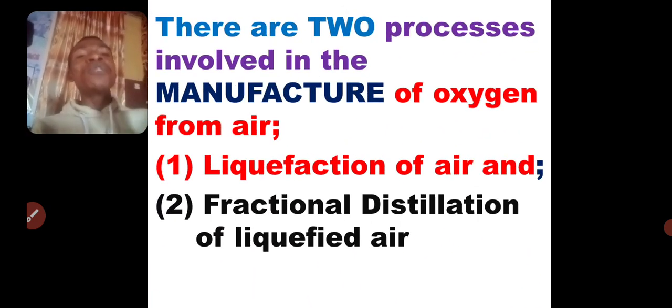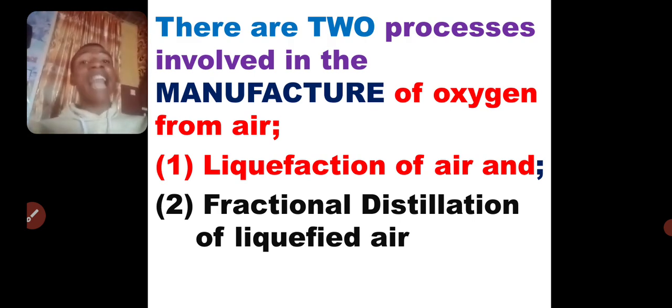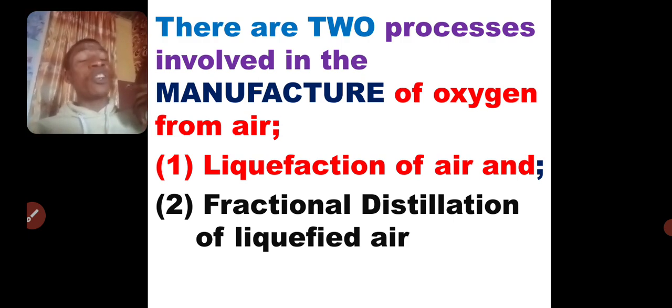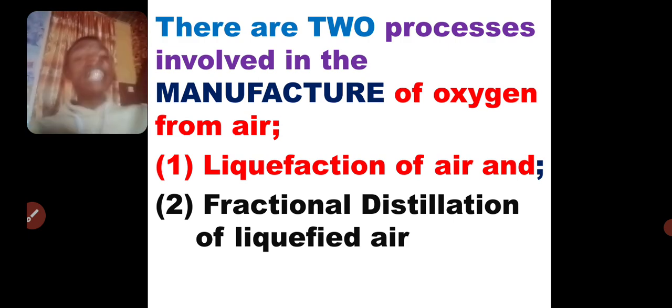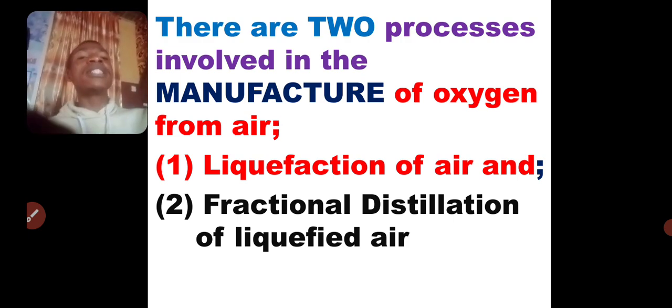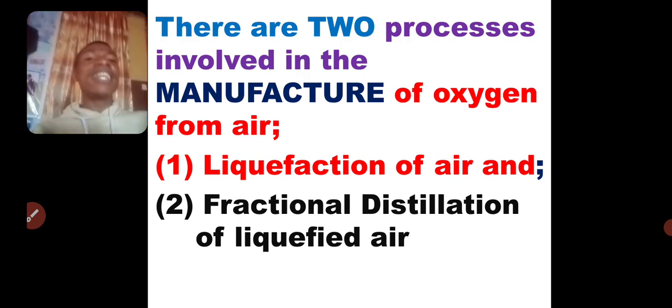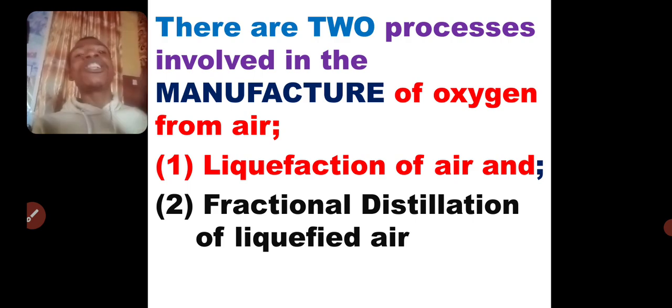When you want to produce or manufacture oxygen industrially from liquified air, two processes are always involved. Number one, you liquefy the air first. After getting rid of all impurities inside, you remove dusts, you remove water vapor, you remove carbon dioxide from the air. You will be left with nitrogen and oxygen and probably with a trace of some noble gases. After you liquefy this air, then you will be left with doing fractional distillation of that liquid air.